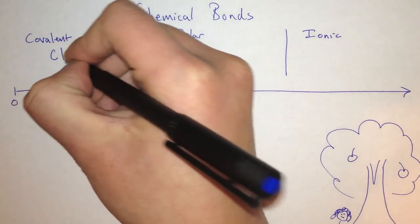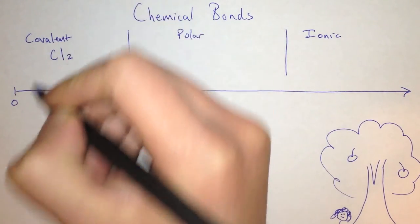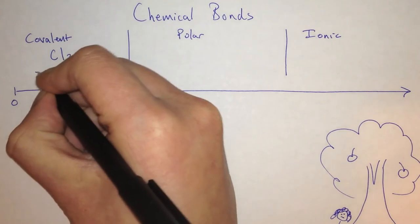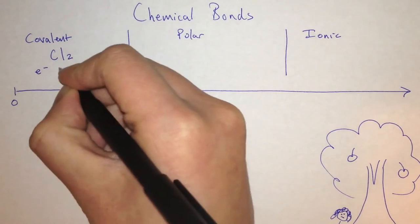In a covalent bond, for example Cl2, the electrons are shared equally.